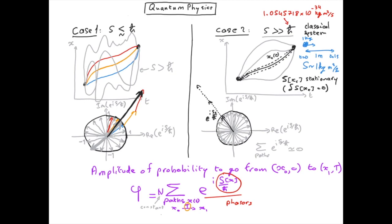So we see that the only path which is going to have a non-zero probability is the classical path, because this is the path which has a stationary action.